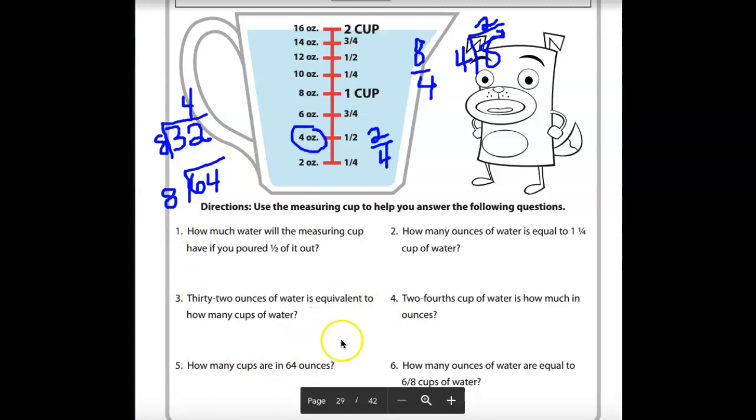We just did this one, 64 divided by 8. How many ounces of water are equal to 6 eighths of a cup? Okay, well, I'm going to write it up here because I have more room. 6 eighths, guys. Let's reduce that. What number will go into both 6 and 8? I hope you said 2. All right. 6 divided by 2 is 3. And 8 divided by 2 is 4. So 6 eighths is the same as 3 fourths. See that? 6 eighths is the same as 3 fourths. And it says how many ounces?